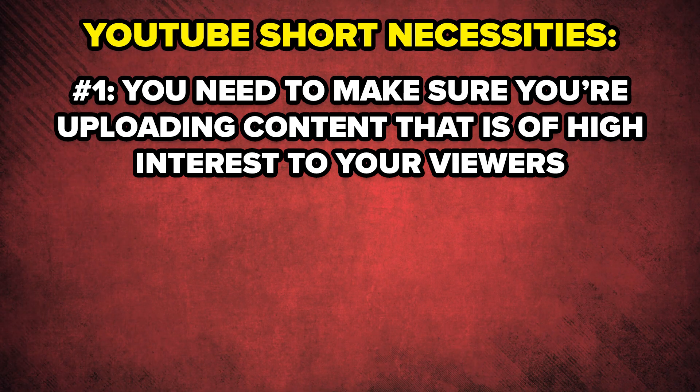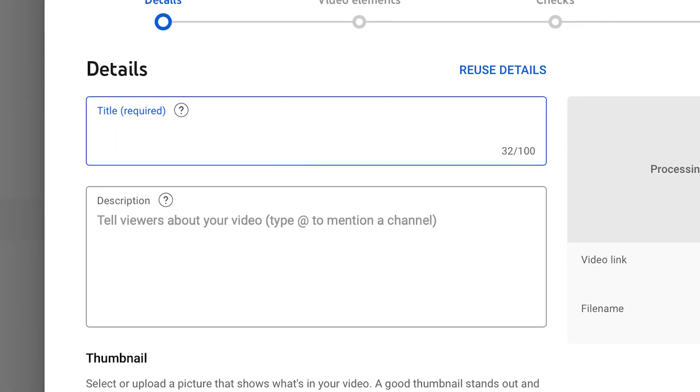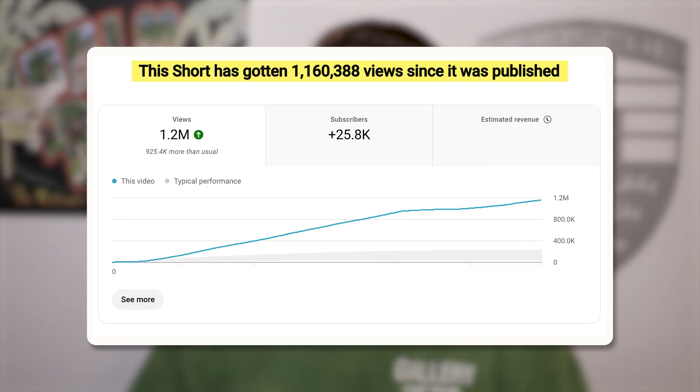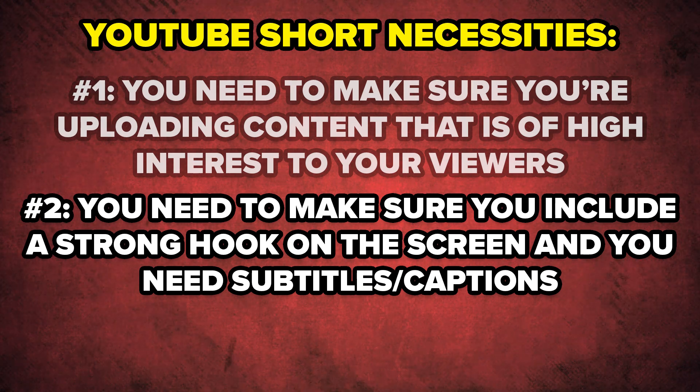Your YouTube Shorts need three specific things to go viral. First, whatever you're uploading about must be of very high interest to your regular viewers — check the Trends tab in your analytics. Make sure those keywords appear in your video's title, description, and tags. Also make sure the length of your content is around the same length as other videos that went viral for creators in your niche.